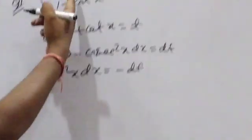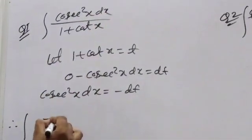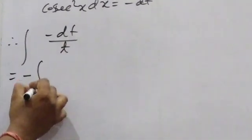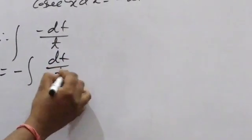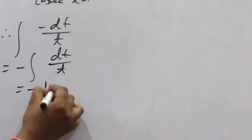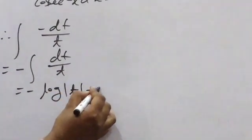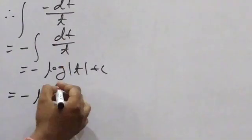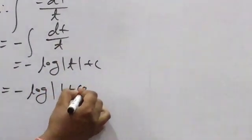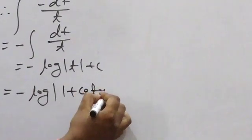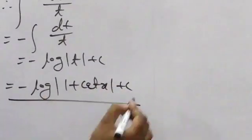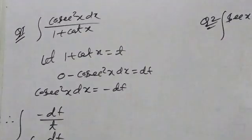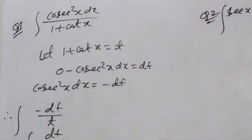Therefore, cosec²x dx means minus dT, and the denominator is T. So we get minus dT/T = minus log|T| + C = minus log|1 + cot x| + C. This is the answer. What is important? Formula and calculation.